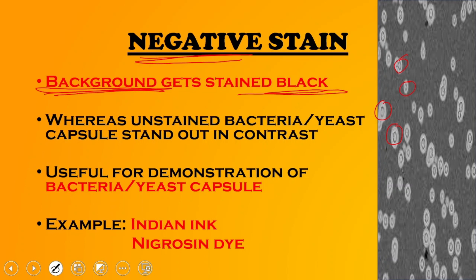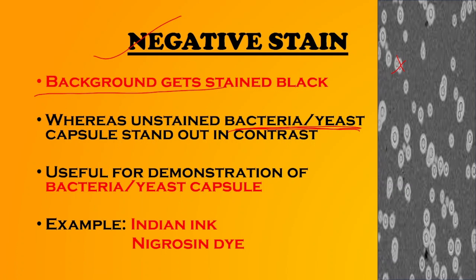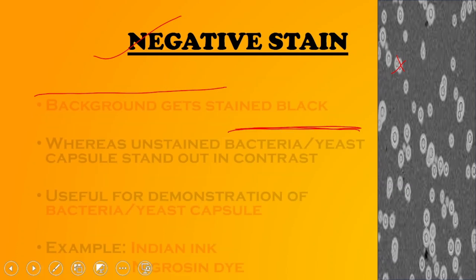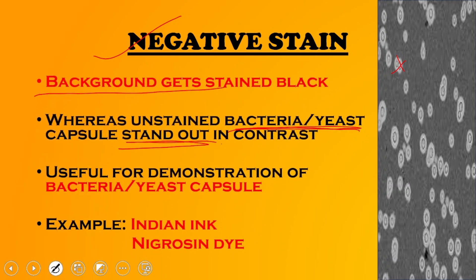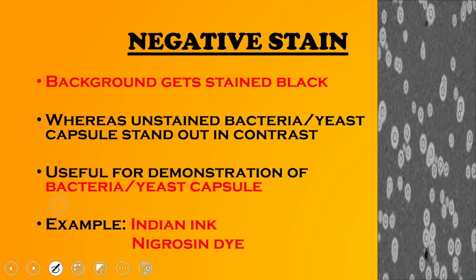Negative stain is used to demonstrate the bacterial or yeast cell capsule. The bacteria have a clear, refractile halo around them representing the capsule. The bacteria stand out in contrast against the stained background because they don't take up the stain. Two important examples of negative stain are Indian ink and nigrosin dye.